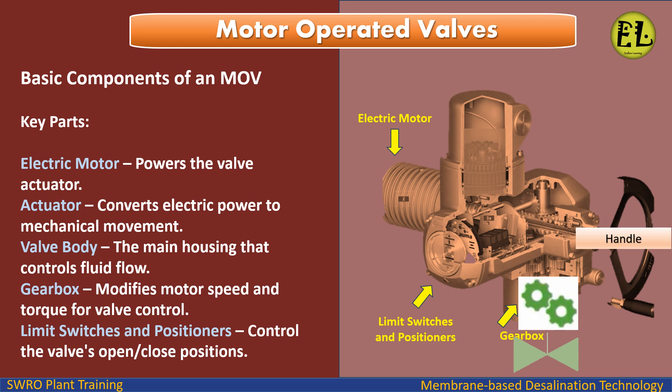Basic components of an MOV include: the Electric Motor, which powers the valve actuator; the Actuator, which converts electric power to mechanical movement; the Valve Body, which is the main housing that controls fluid flow; and the Gearbox, which modifies motor speed and torque for valve control.